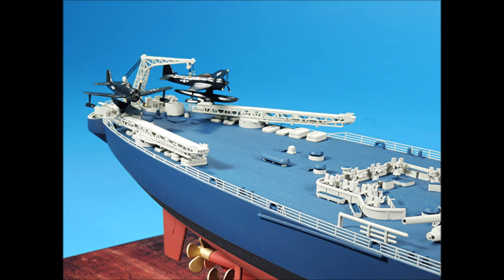This concludes Part 4 of Super Detailing the Tamiya 1-350th scale USS Missouri, and stay tuned for Part 5 when we start airbrushing all of the parts starting with the hulls.